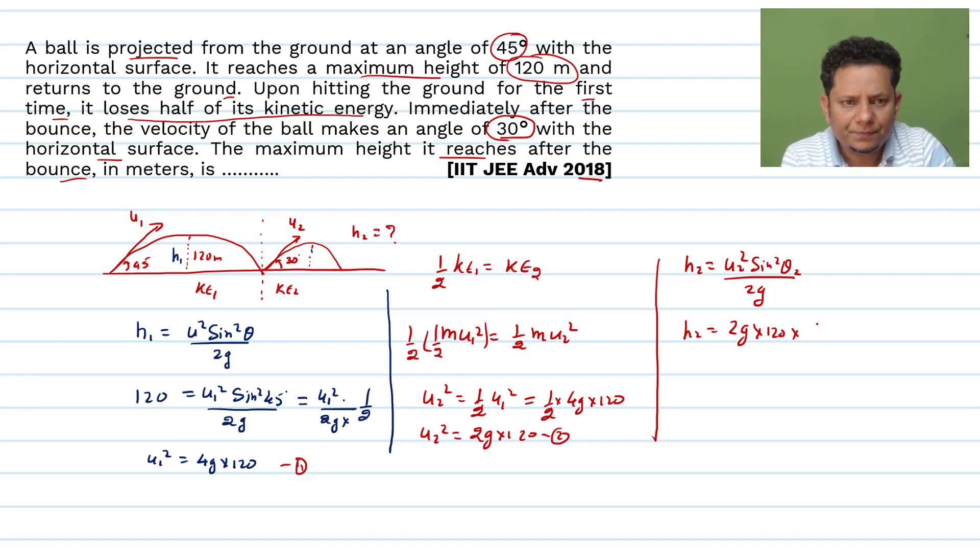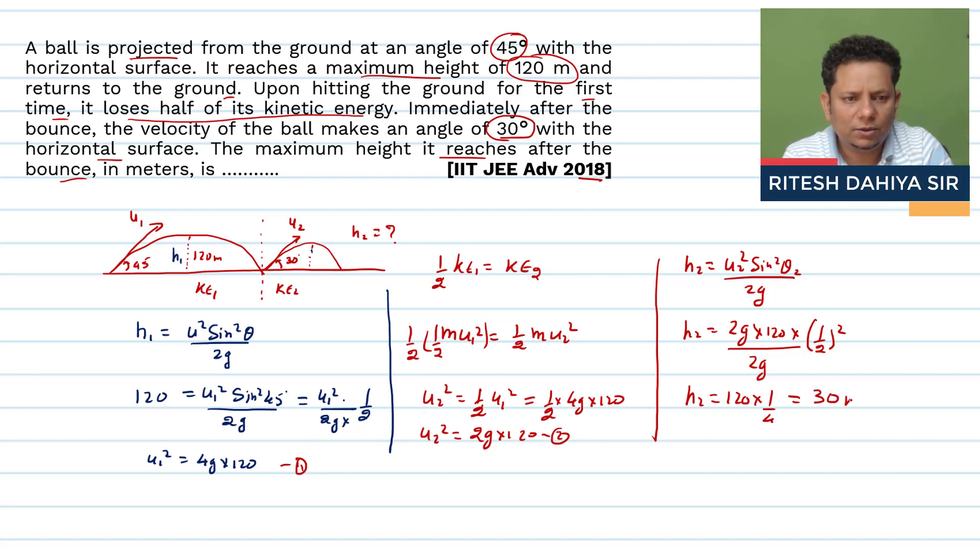Second time is 30 degrees. So this is 1 by 2 squared divided by 2g. Now 2g will get cancelled. So this is h2, 120 multiplied by 1 by 2 squared, this is 1 by 4. That means this will be equal to 30 meters.